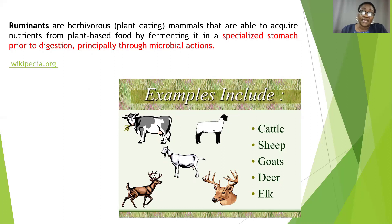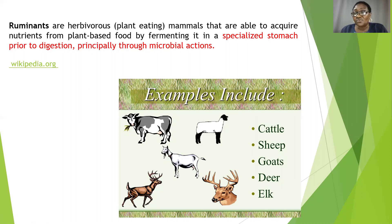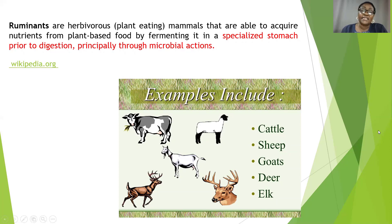Examples of these animals that you can find around include cattle, sheep, goats, deer, and elk. These animals are very different from other classes of livestock such as poultry like the chicken, rabbits, or pigs, because those other classes of animals do not have this specialized stomach that enables microbial digestion.